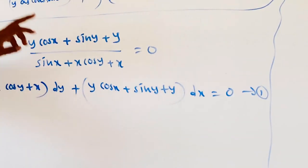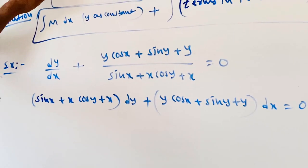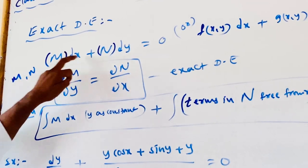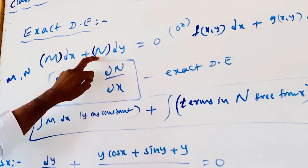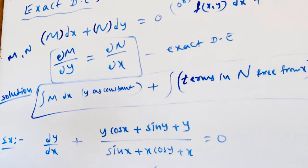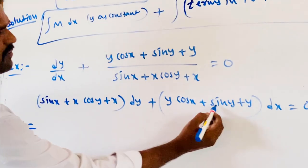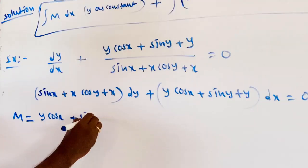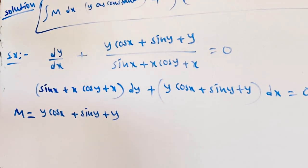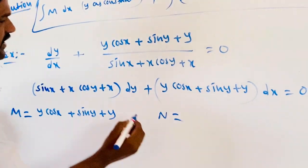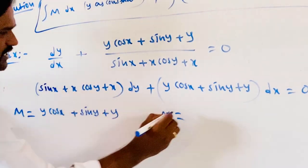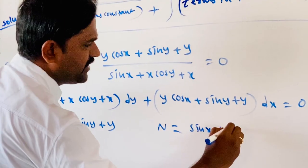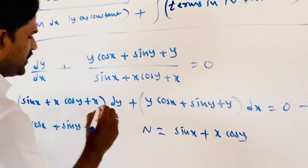Observe the form of the exact differential equation: M dx plus N dy. The coefficient of dx is taken as M, and the coefficient of dy is taken as N. So M equals y cos x plus sin y plus y, and N equals sin x plus x cos y plus x.